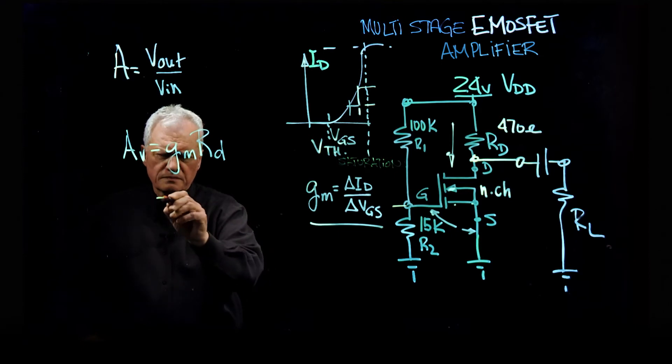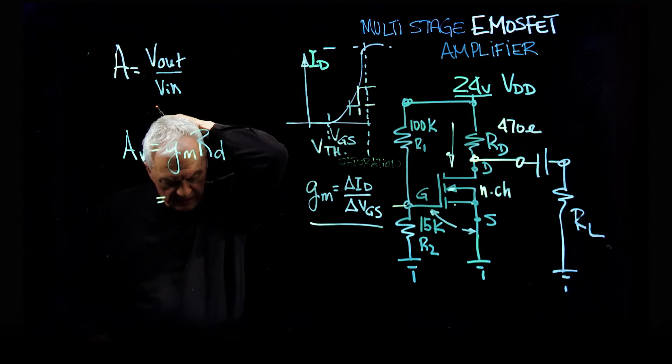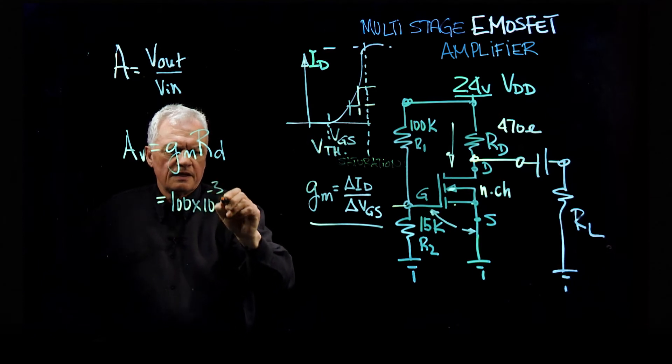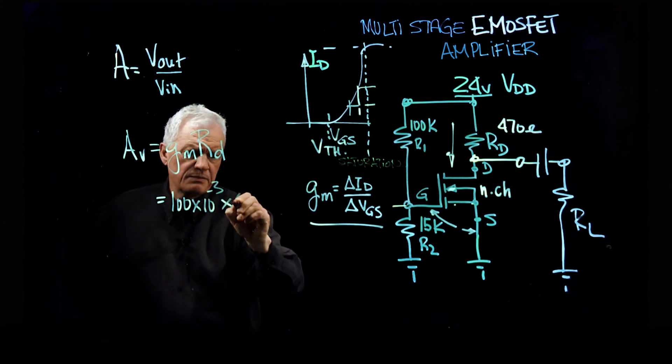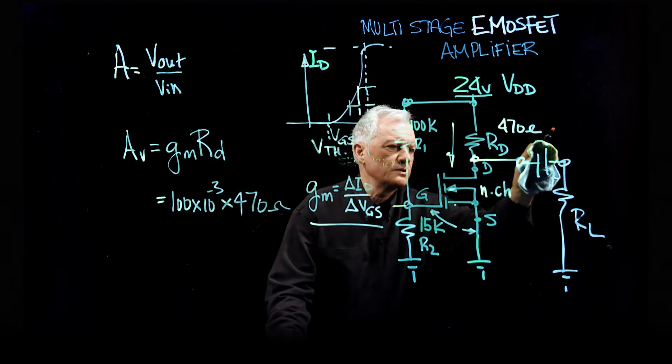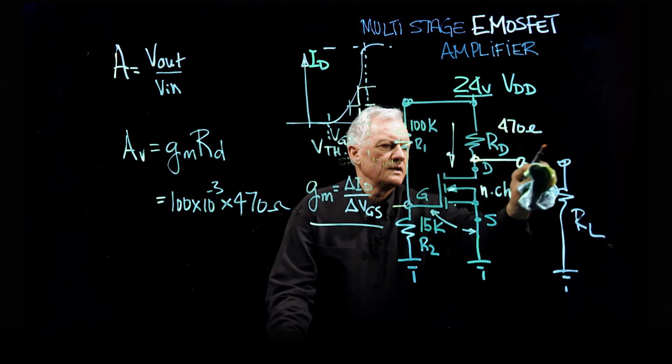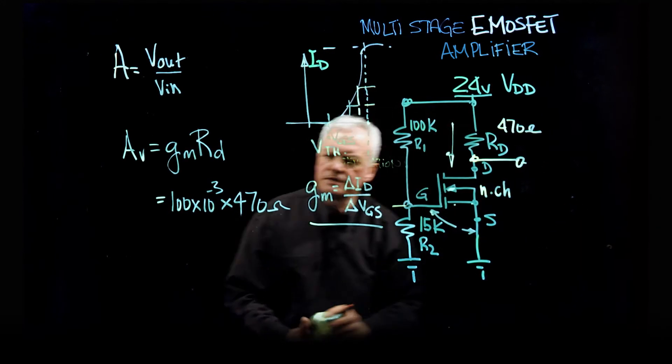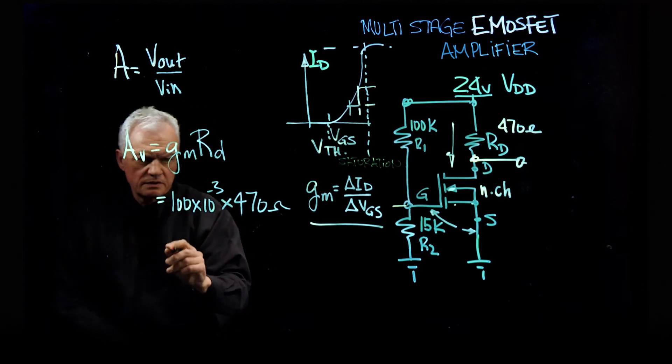So let's use the big RD. And that would be, so we had 100 millisiemens, it's 100 times 10 to the minus 3, and we are multiplying that by 470 ohms. So I'm just going to remove this RL so there's no confusion. And so that should give us a number.